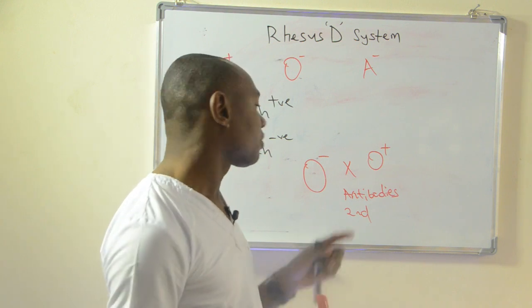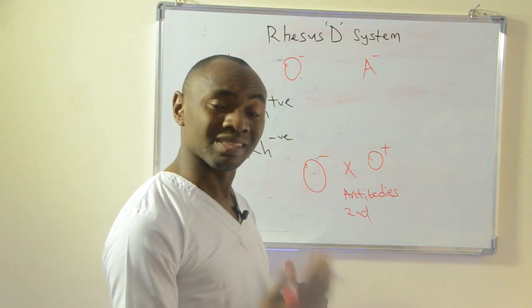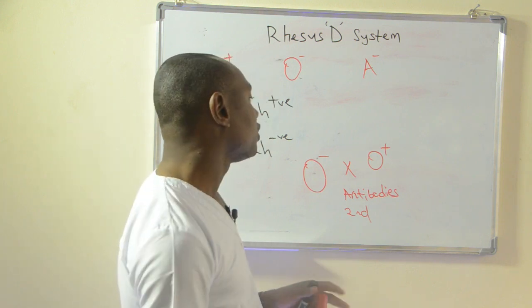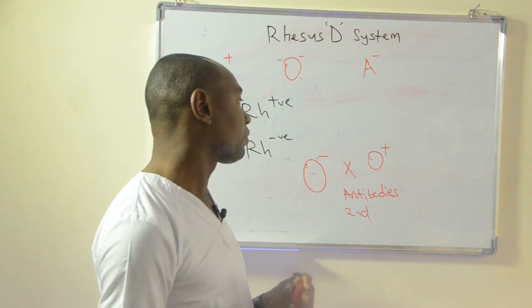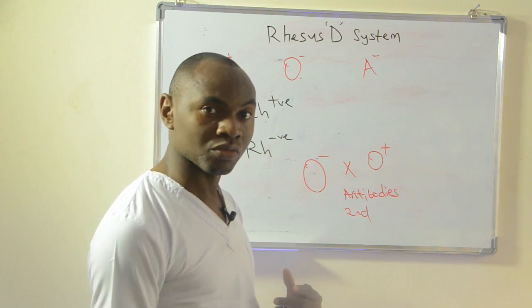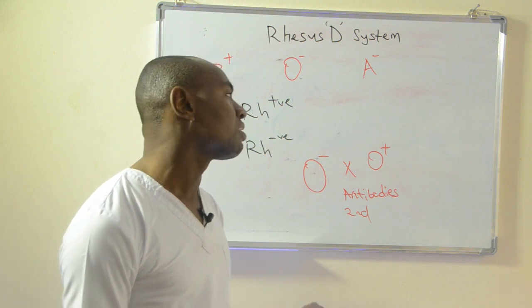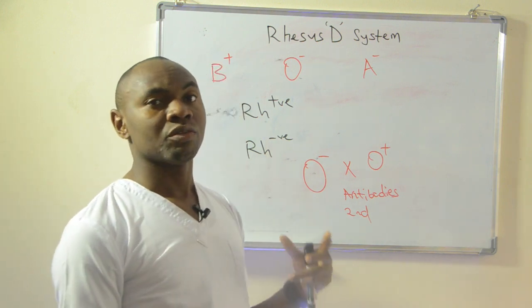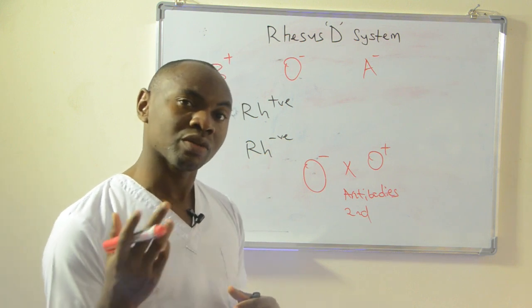Because when the woman is O negative in the hospital it is detected and a drug is given, popularly known as RhoGAM. Drug is given for the woman's second and subsequent child to prevent miscarriage or any form of intrauterine death. So this is the major function of Rhesus D system.